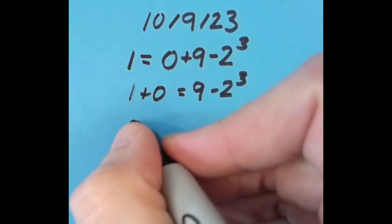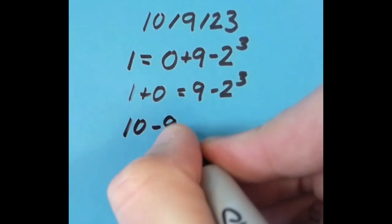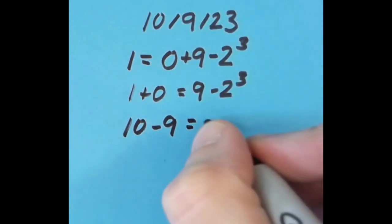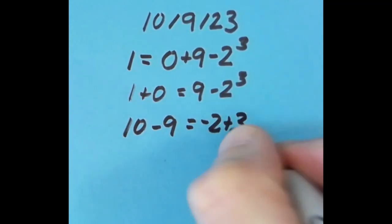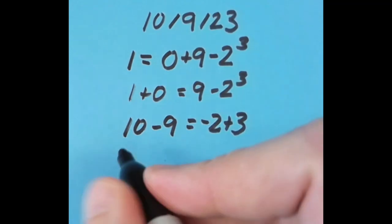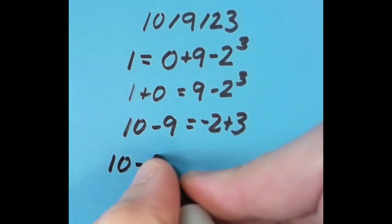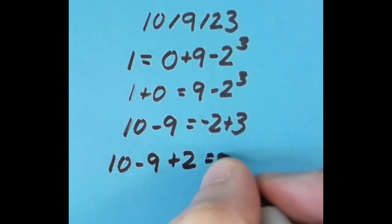With the equal sign in another spot to the right, I did 10 minus 9 equals negative 2 plus 3. And then finally, with the equal sign in the last spot, 10 minus 9 plus 2 equals 3.